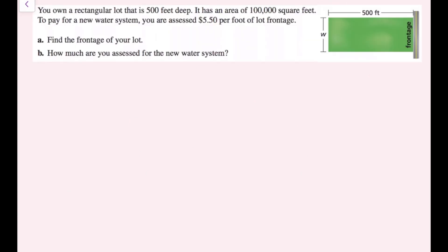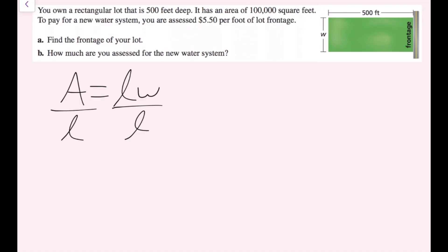You own a rectangular lot that is 500 feet deep and has an area of 100,000 square feet. To pay for a new water system, you are assessed $5.50 per foot of lot frontage. First we want to find the frontage of the lot — the frontage is the same as the width. So we're going to solve for w. The area of a rectangle is length times width. I could plug in directly, but I'll use the literal equation first and then plug in after. To solve for w, I divide both sides by l, giving w equals area over length.